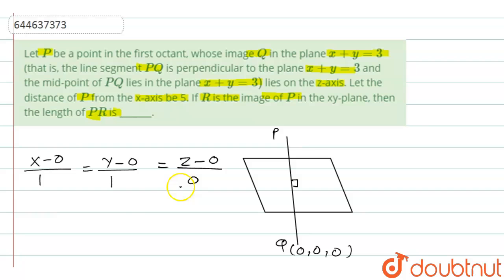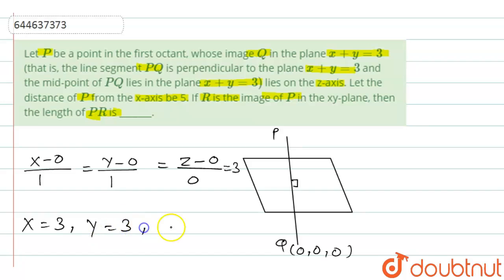Since x plus y equals 3 and using the line equation, we get x equals 3, y equals 3, and z equals 0.